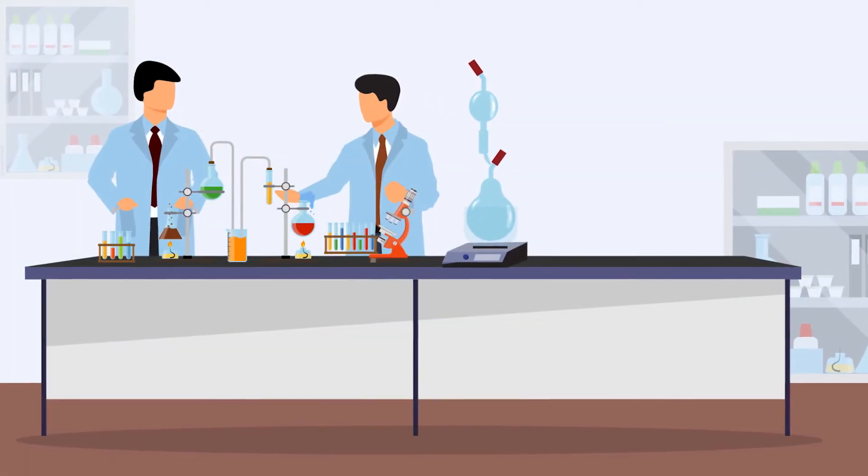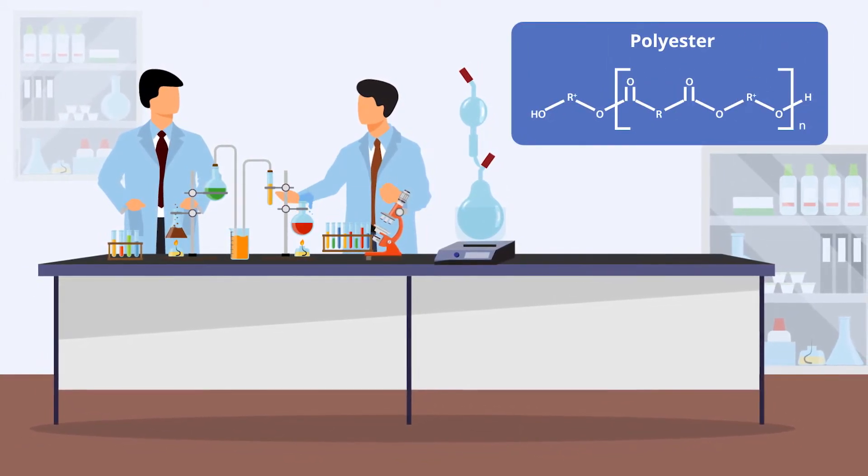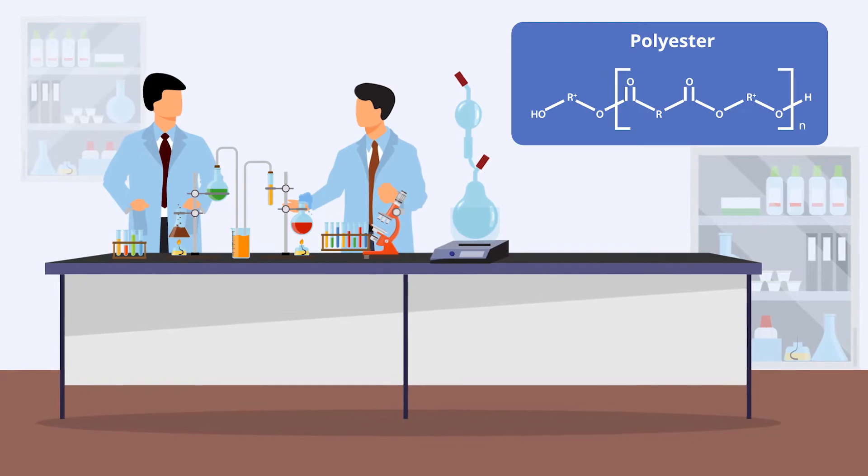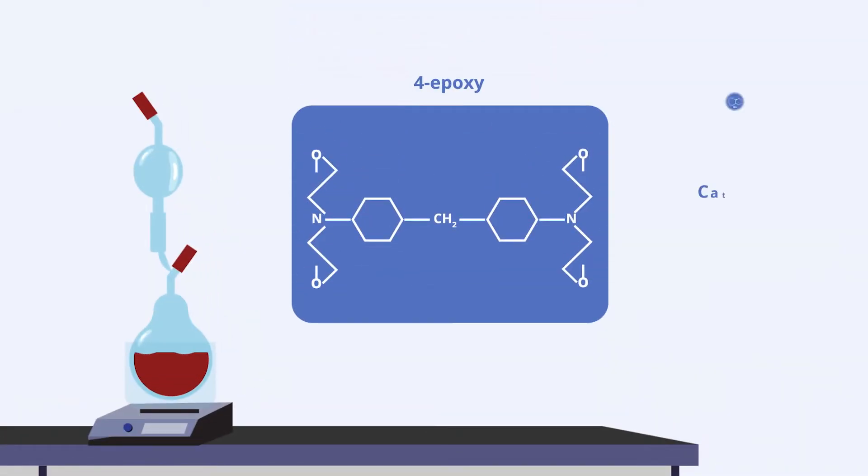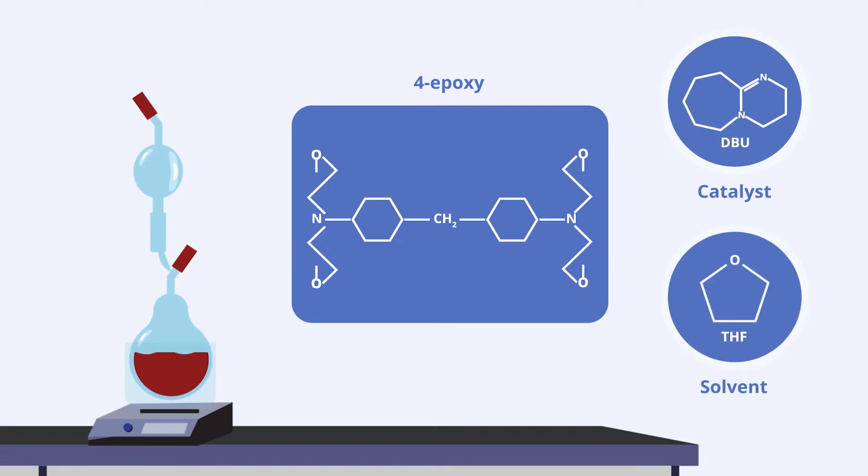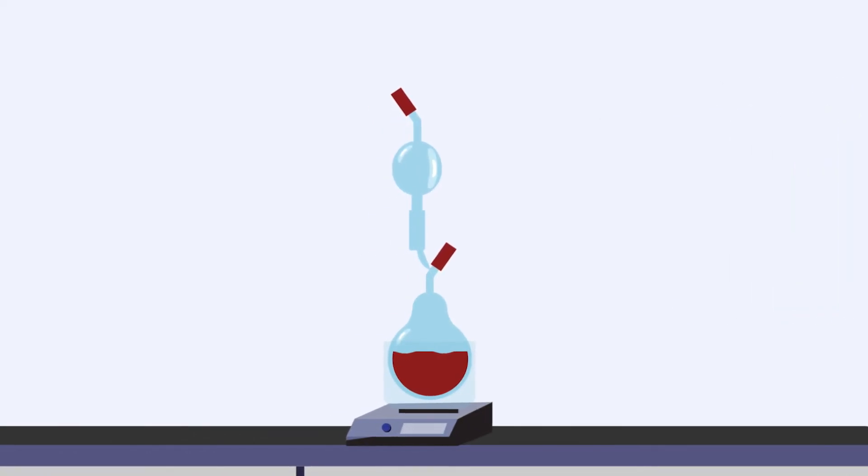In their study, the researchers developed a one-shot conversion process in which polyester can be turned into a vitremer by simply mixing it with a cross-linker reagent and a catalyst in the presence of a solvent and heating the bulk mixture to 200 degrees Celsius after all the solvent had been evaporated.